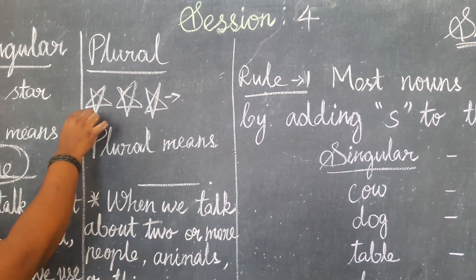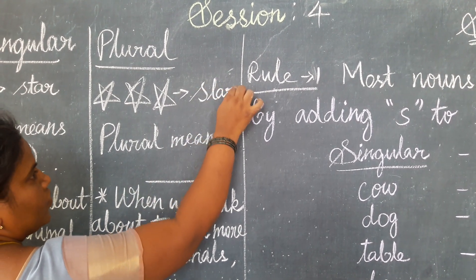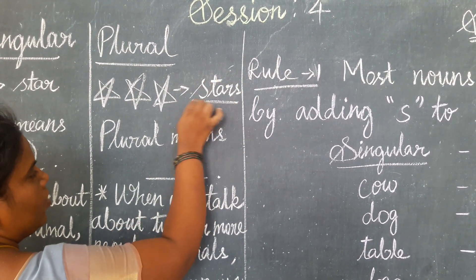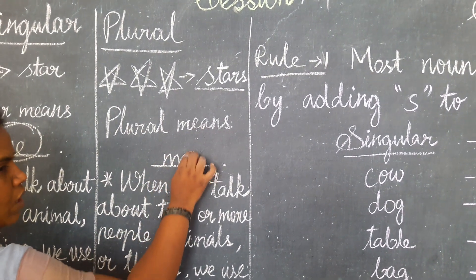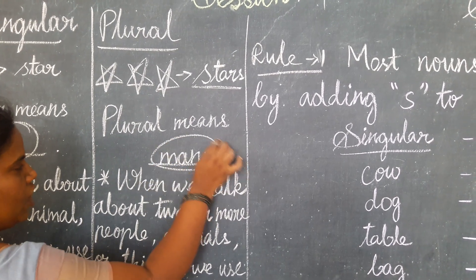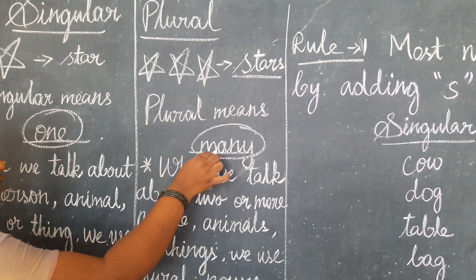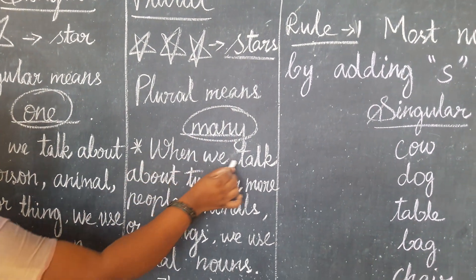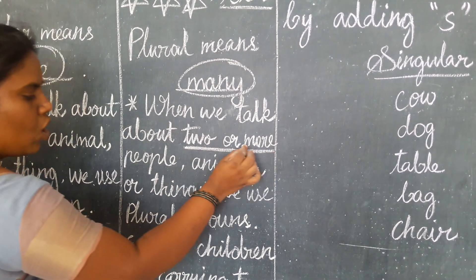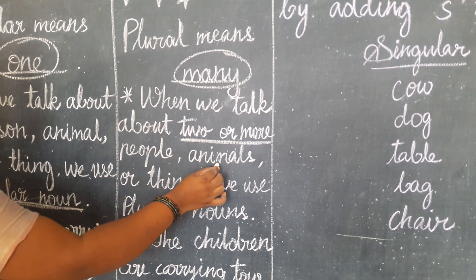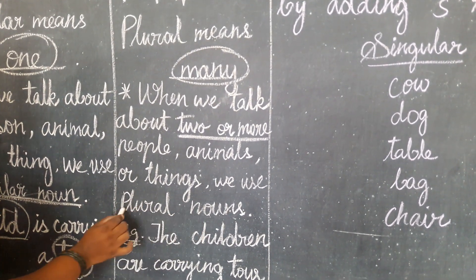How many stars here? Good. Three stars. So plural means many. Here singular means one, here plural means many. When we talk about two or more people, animals or things, we use plural nouns.